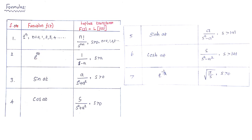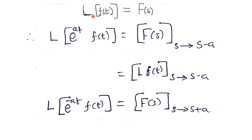The shifting property: the Laplace transform of f(t) is F(s). Then the Laplace transform of e^{at}·f(t) — multiplying e^{at} in front of f(t) — when the Laplace transform of f(t) is F(s), the Laplace transform of e^{at}·f(t) is equal to F(s) with s replaced by s minus a.